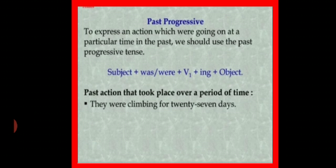Now what is its sentence structure? Subject plus was or were plus verb's first form plus ing plus object. When there is continuity in any action, we normally use ing added with the verb. So look at the example here, they were climbing for 27 days. They is the subject, with which we use were, climb is the first form of the verb, plus ing. So it's a perfect Past Continuous Tense sentence.